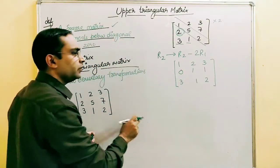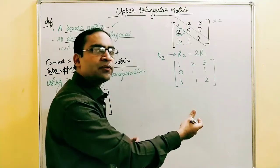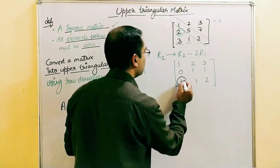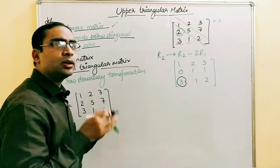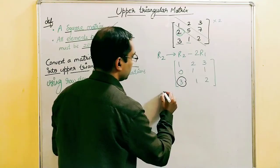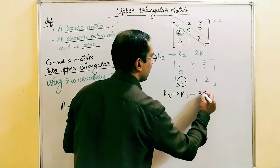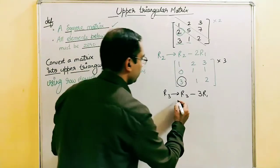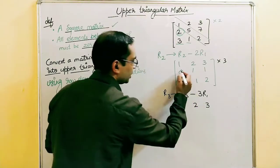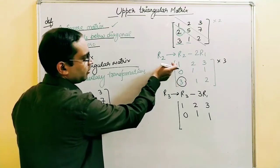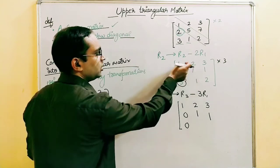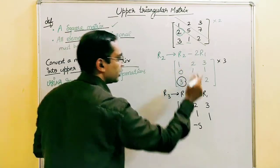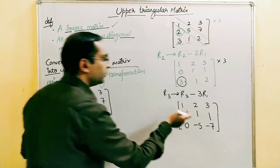Now we move down the same column to convert the next element, 3 (row 3, column 1), to zero. Again, it's in column one so we use row one. The operation is R3 = R3 − 3×R1. Row one stays [1, 2, 3] and row two stays [0, 1, 1]. For row three: 3 − 3×1 = 0, 1 − 3×2 = −5, 2 − 3×3 = −7. So row three becomes [0, −5, −7].